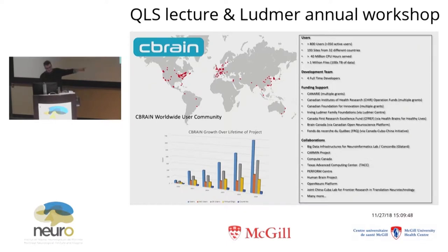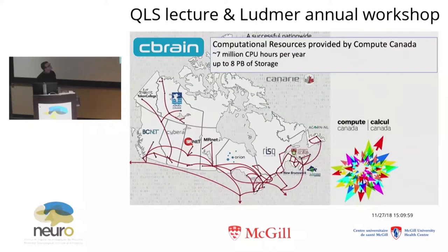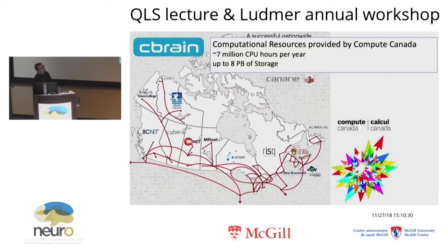We have a number of different funding sources and collaborators around the world. Since 2010, we've grown very steadily in our user base and the number of resources in the system. Most of our resources come from Compute Canada — it's a very nice organization that provides a lot of different computing resources. We have a node here at the ATS getting a new computer soon called Beluga, which is going to be really large by Canadian standards. C-Brain sits in front of this entire network of computers with high-speed connections between them. We receive our allocation through our CFI award, and Compute Canada is a very strong partner with C-Brain.